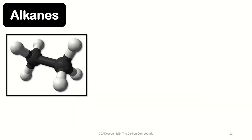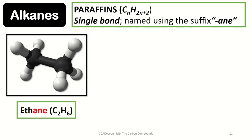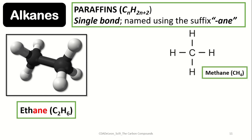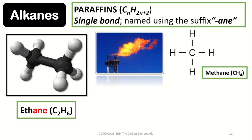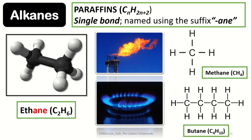Alkanes are also known as paraffins, with a general formula of CnH2n+2, where n represents the number of carbon atoms. Alkanes form single bonds and are named using the suffix -ane. For example, ethane has two carbon atoms with a single bond. Alkanes are used primarily as fuels. Methane, the most basic alkane with one carbon and four hydrogen atoms, is extracted from fossil fuels. Butane, made up of four carbon atoms and ten hydrogen atoms, is widely used as fuel for gas stoves.